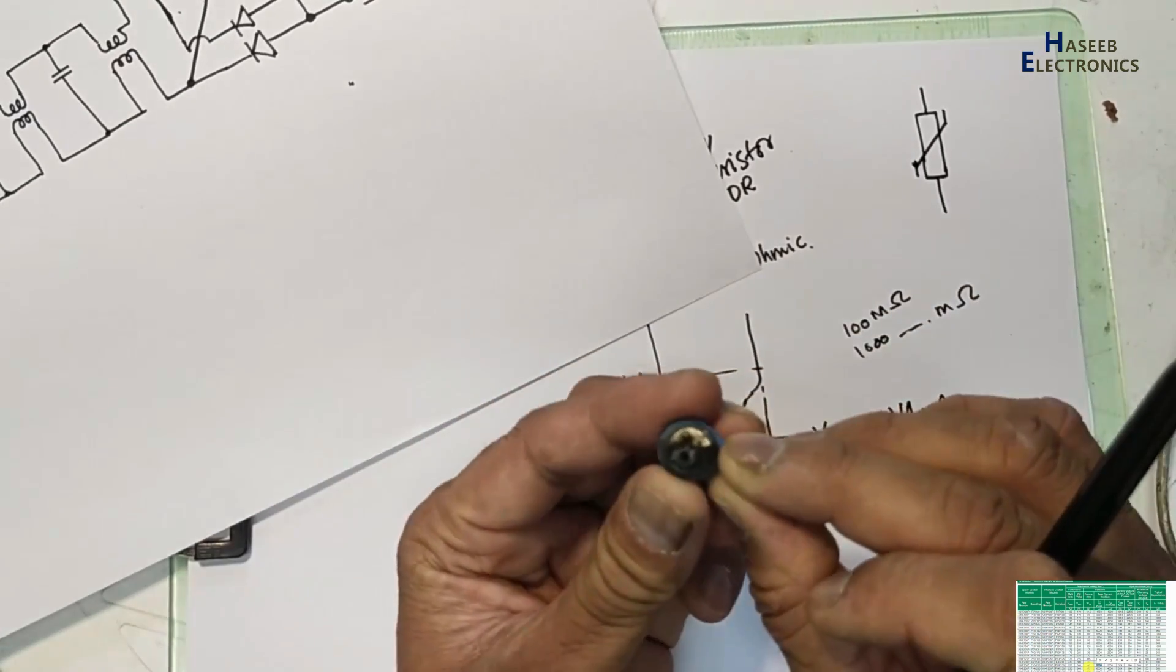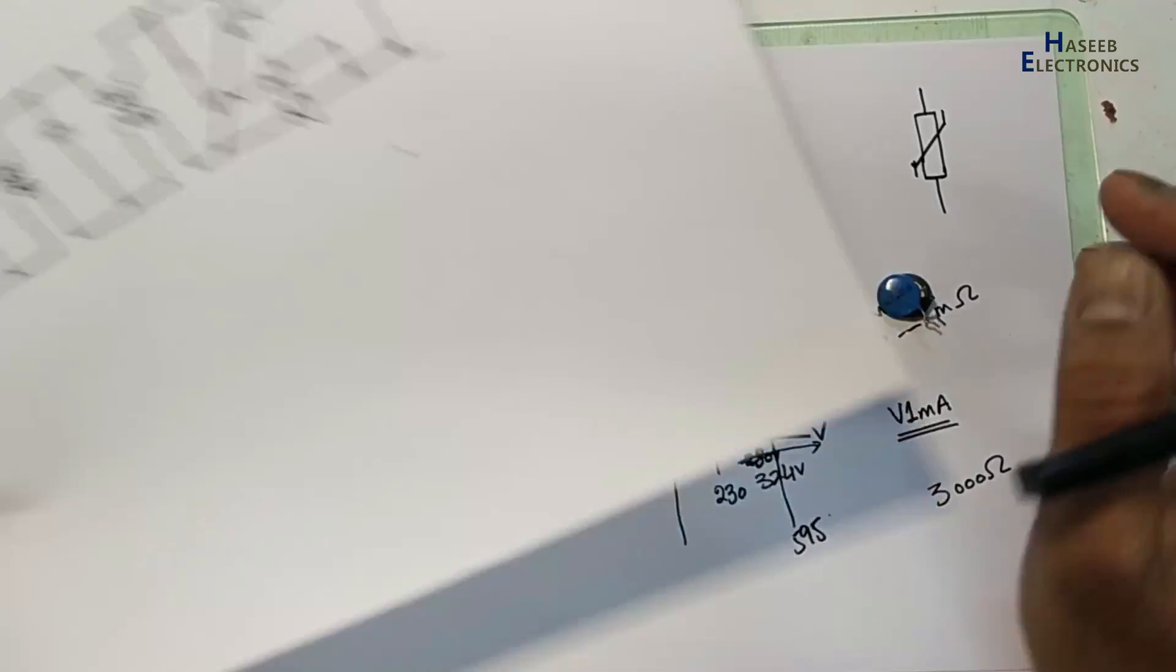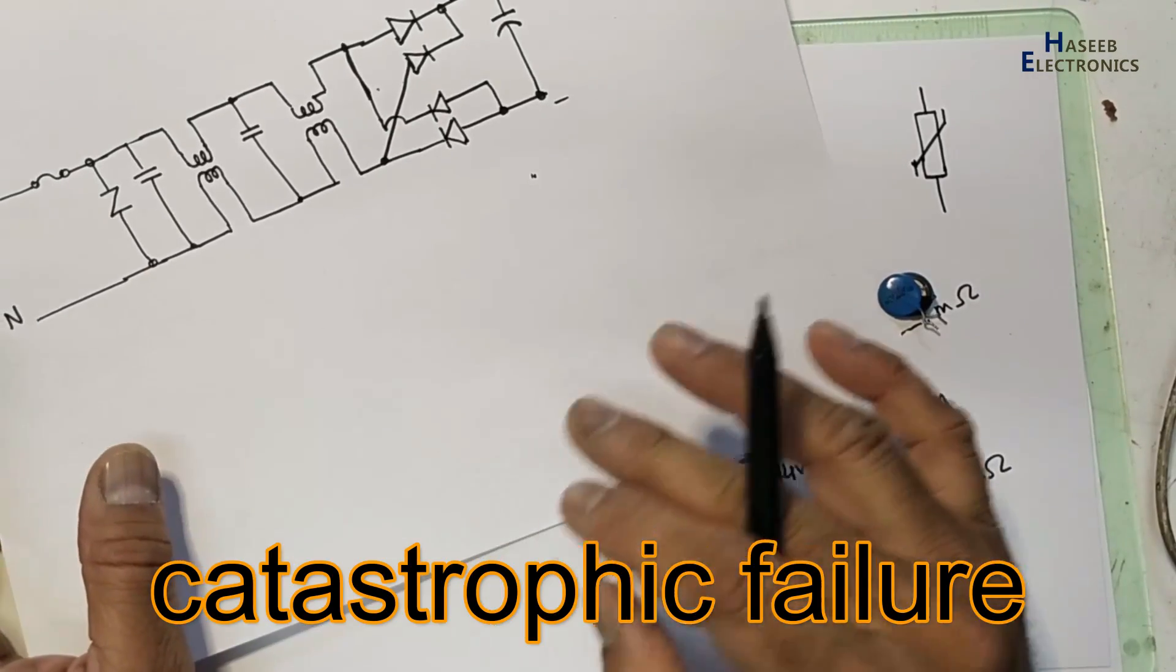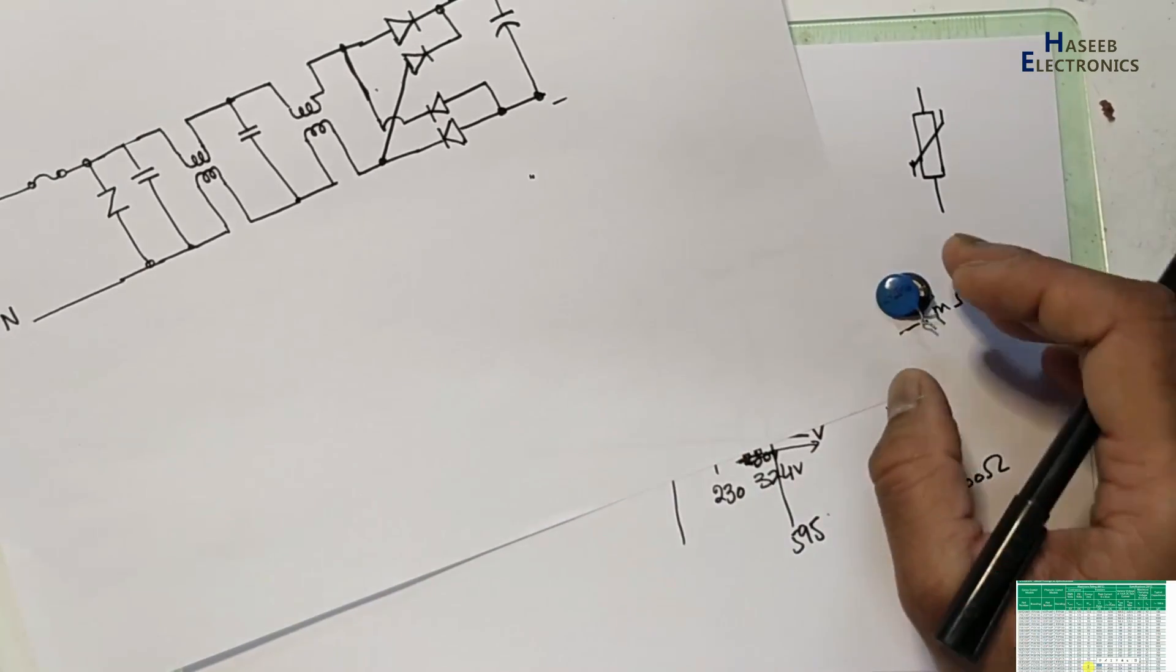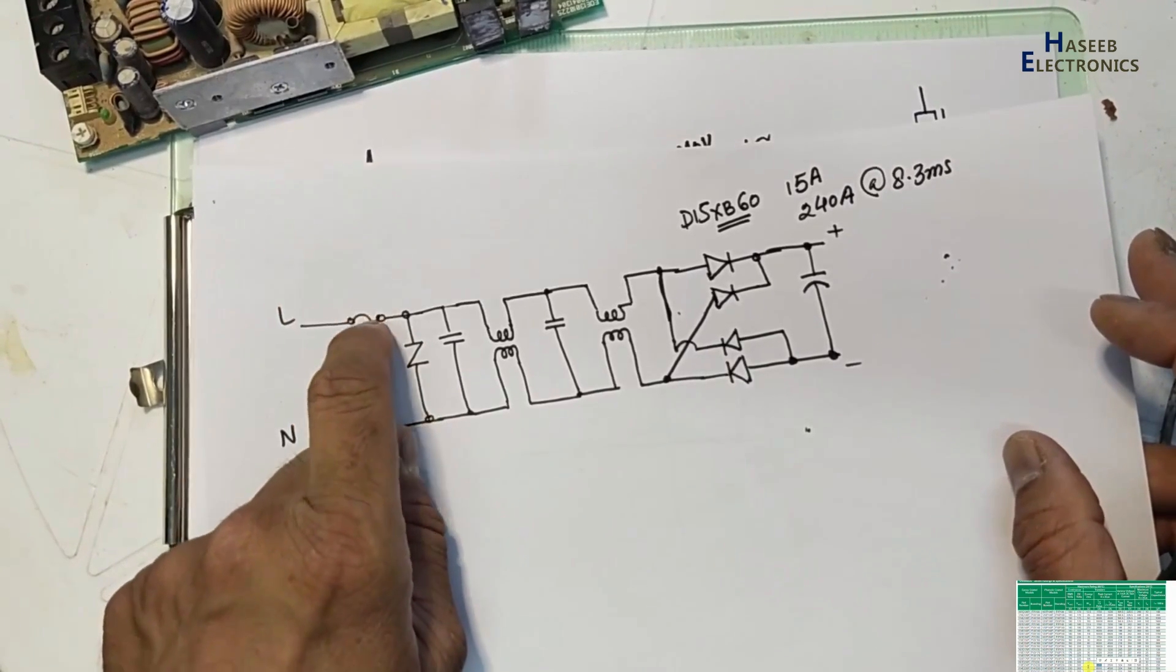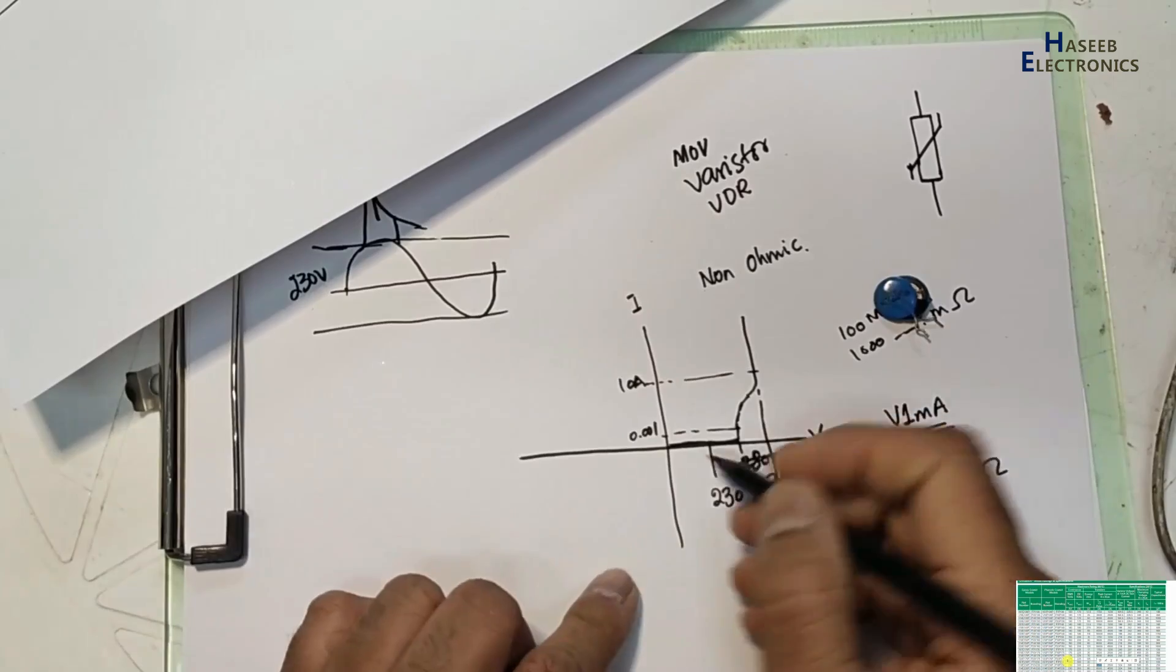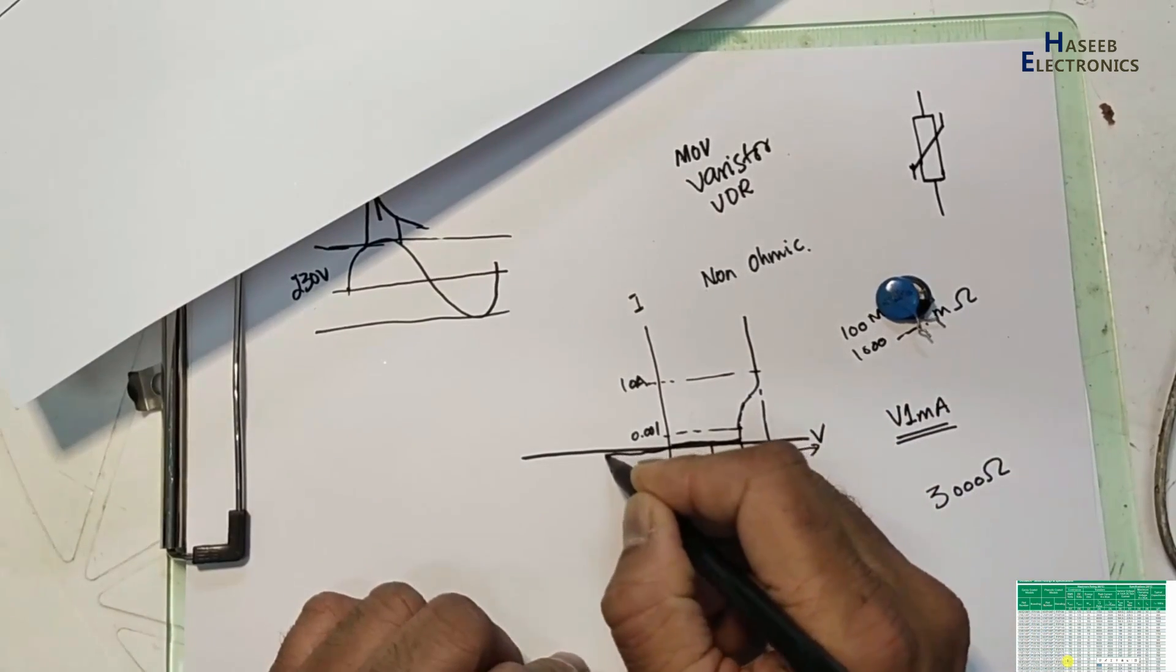When it melts, it will make a short circuit between these two terminals - this one and this one - catastrophic failure. It will damage. In the meantime, the fuse will open. When the fuse opens, the next circuit will be protected. So this responds in both directions.